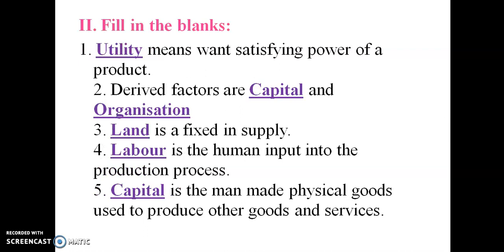Fill in the blanks. Utility means the want-satisfying power of a product. Capital and organization are derived factors. Land is fixed in supply. Labor is the human input into the production process. Capital is the man-made physical goods used to produce other goods and services.